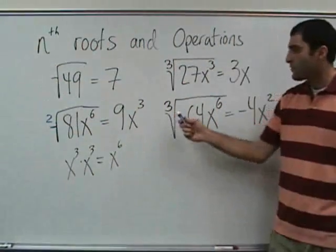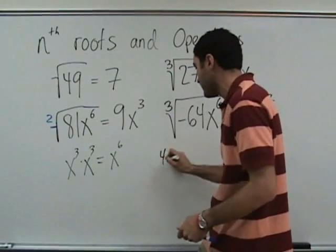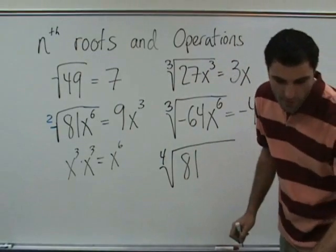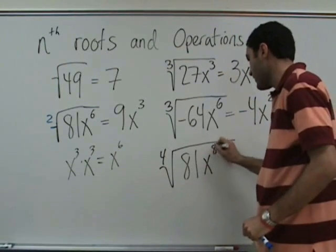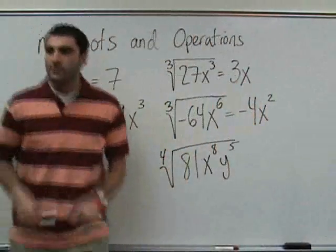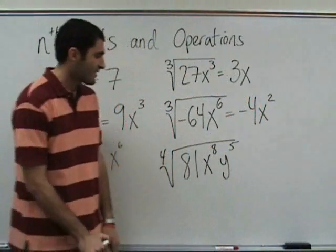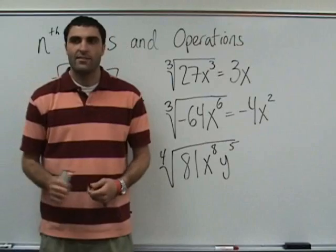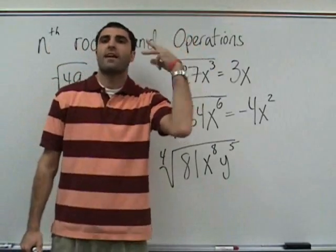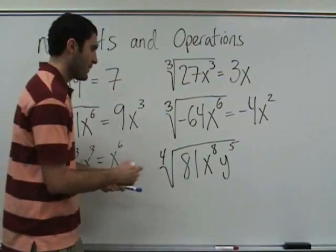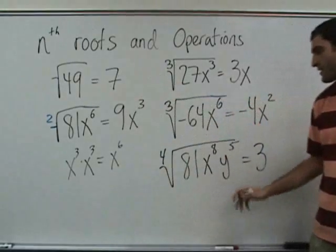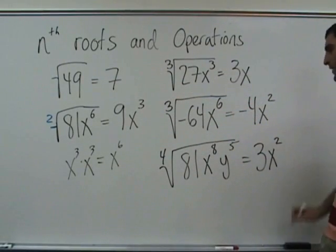So we've done square root and cube root. Now fourth root. One problem: the fourth root of 81 x to the 8 y to the 5. What times what times what times what is 81? Three. X to the 8 — four times itself is x to the 8, so x squared. Very nice.